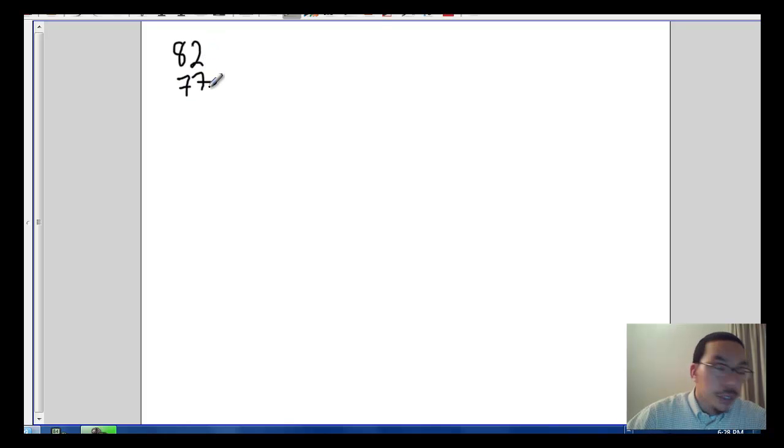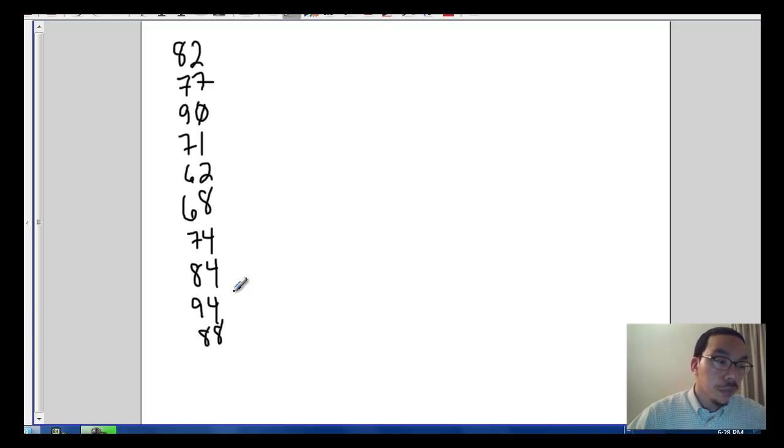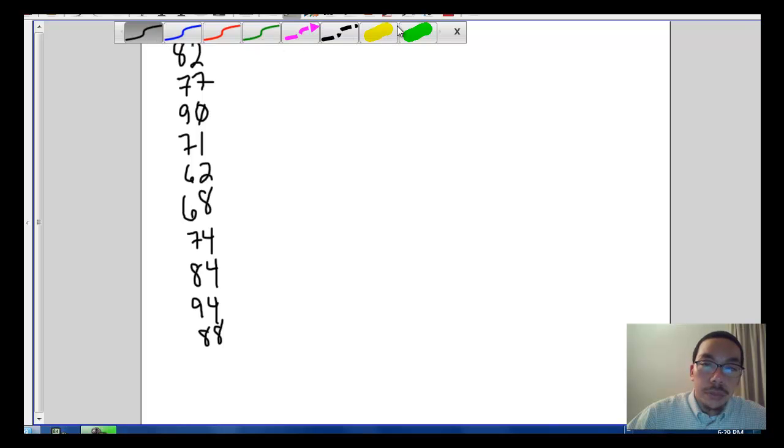I have it written down in front of me so I can just copy my chart over. 82, 77, 90, 71, 62, 68, 74, 84, 94, and 88. Okay, so let's remember that these are our x sub i data values. So now let's say what about the score squared, x sub i squared.